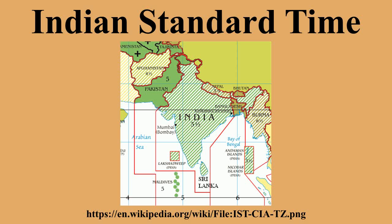Indian Standard Time is the time observed throughout India and Sri Lanka, with a time offset of UTC plus 5:30. India does not observe daylight saving time or other seasonal adjustments. In military and aviation time, IST is designated D**. Indian Standard Time is calculated on the basis of 82.58 degrees east longitude in Shankargarh Fort, Mirzapur, which is nearly on the corresponding longitude reference line.